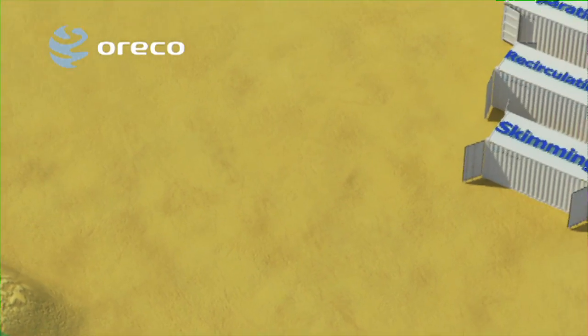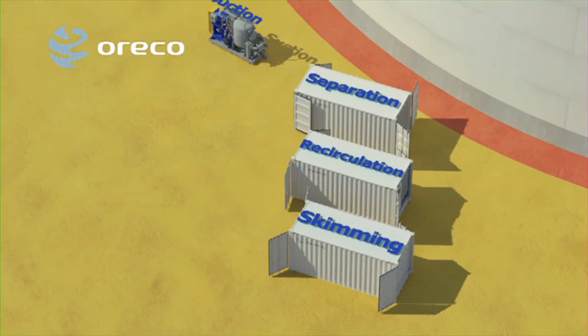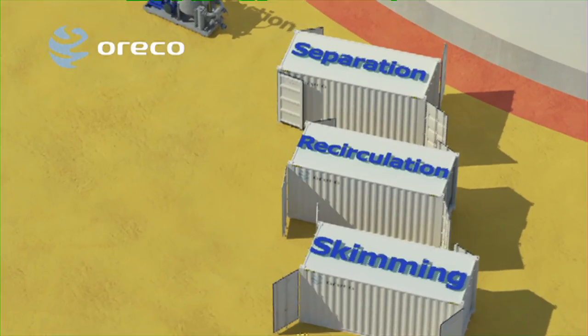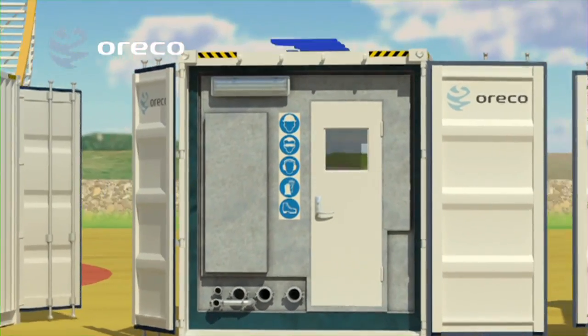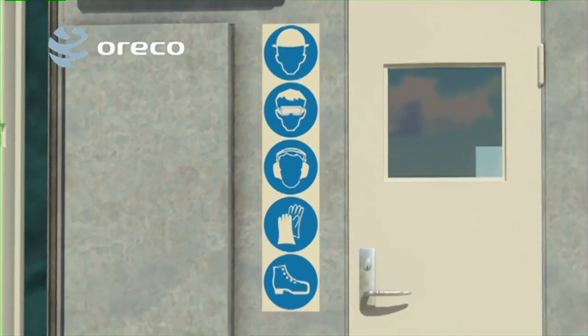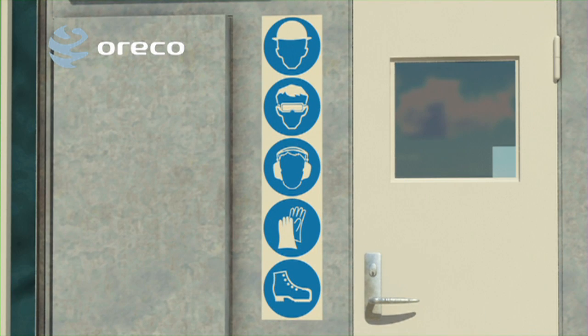Built-in warning systems, constant monitoring and progress reporting ensure safety throughout the entire operation. Operators are thoroughly trained by Oroco to operate the system and perform the strictest safety procedures.